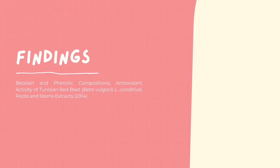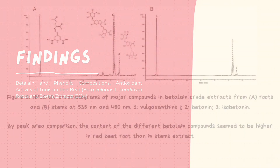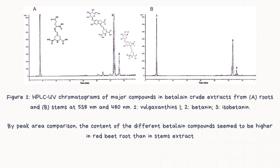Based on a journal article titled 'Betalain and Phenolic Compositions, Antioxidant Activity of Tunisian Red Beet Roots and Stems Extracts,' published in 2014, findings from the HPLC analysis of red beets were obtained. Figure 1 shows the HPLC UV chromatograms of major compounds in the betalain crude extracts from the roots (chromatogram A) and the stems (chromatogram B) at 538 nm and 480 nm. Peaks are numbered 1, 2, and 3, corresponding to vulgaxanthin I, betanin, and isobetanin. The content of the different betalain compounds appears to be higher in red beet root than in the stem extract.